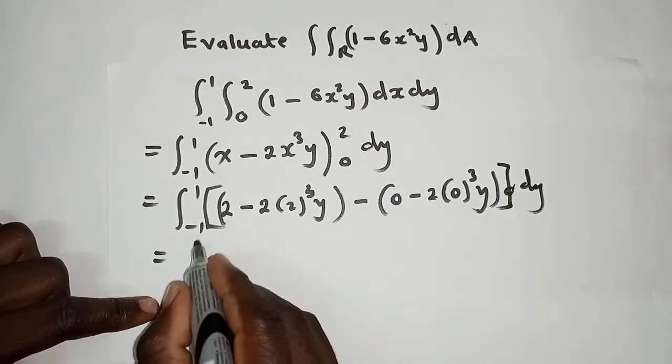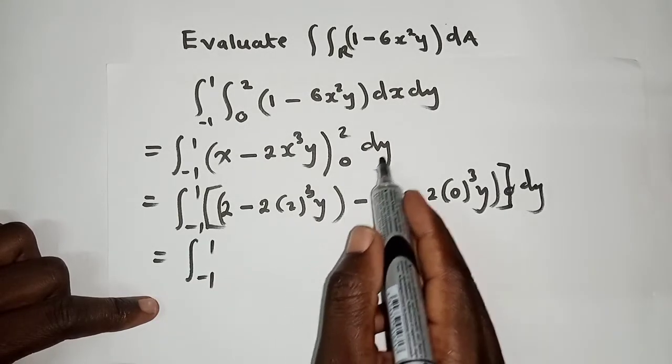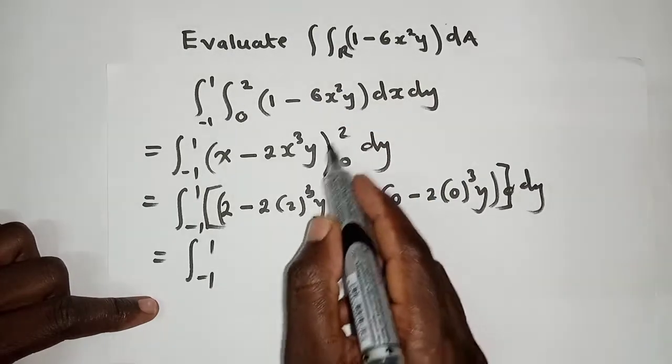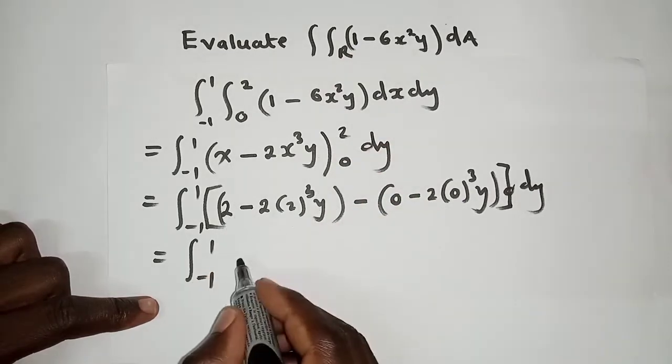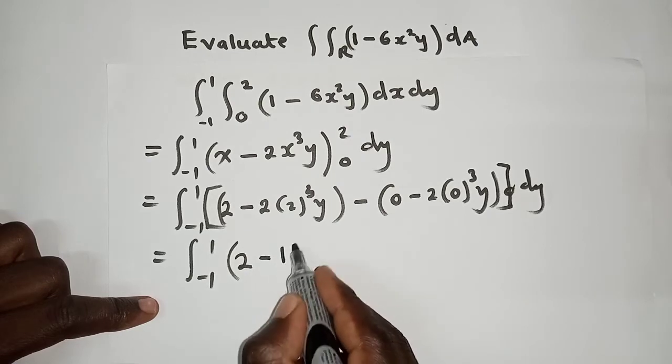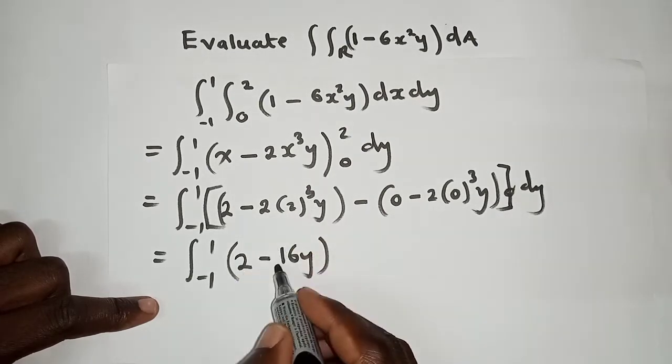So now next we'll just work out what is inside here. Mind you this is double integral, so the Y is outside and the Y we're able to see here acts as a constant. There is nothing that we're going to do to it.